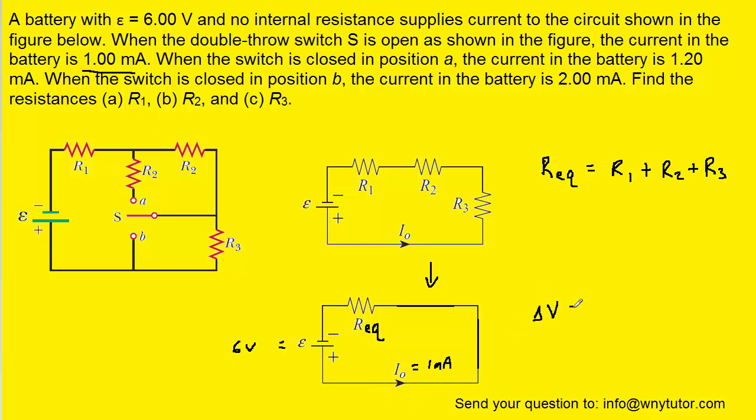From Ohm's law we know that delta V is equal to I times R. We can apply this equation to this simplified circuit to find the resistance. We'll divide both sides by I and then we will plug in the known value of delta V, which is 6 volts, and the known value of I, which is 1 milliamp. We have to convert that to amps by multiplying by 10 to the minus 3.